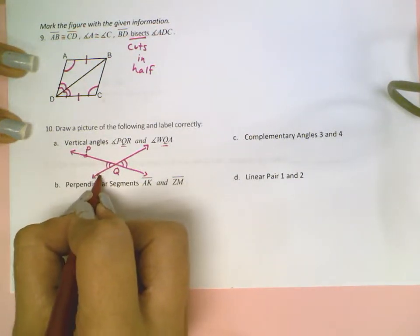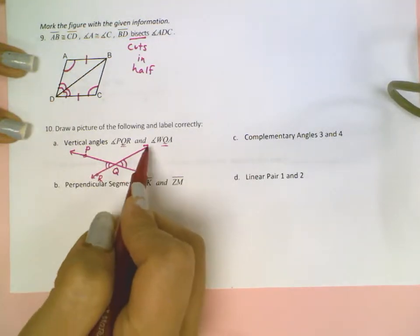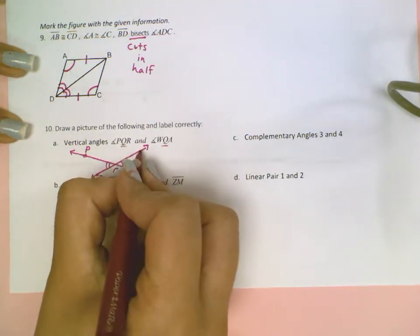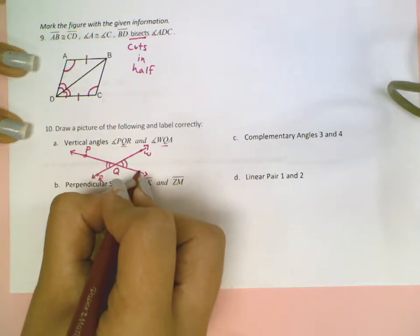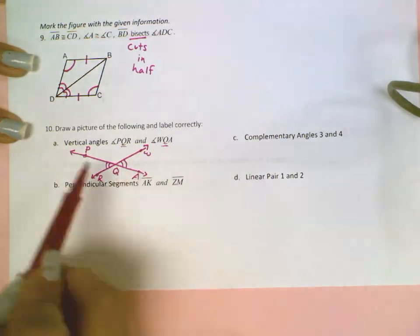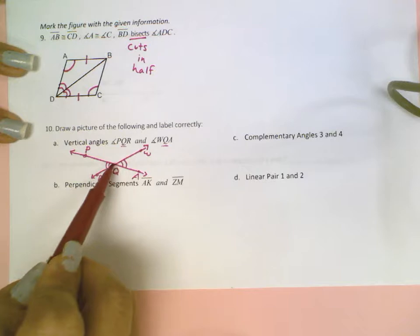This angle will be WQA, so I can put W anywhere over here and A anywhere over here. So I can follow it and make sure that everything lines up.